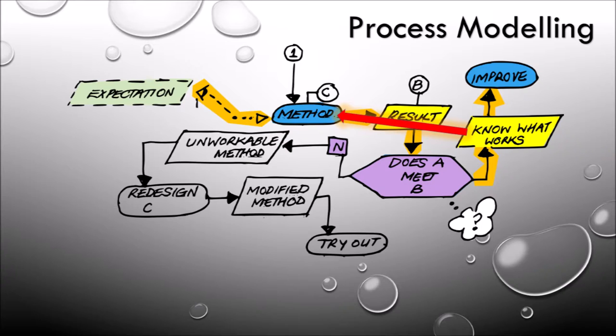In the case of getting good marks, it would indicate that our method was a good method and that it worked. A poor mark, on the other hand, would say that it's an unworkable method and therefore requires redesign.